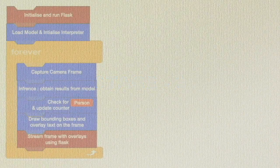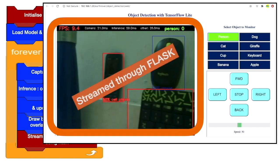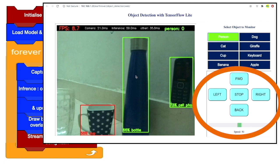In the third stage I created a simple web page that accommodates the output stream generated through Flask. It also has a mechanism for selecting a particular object for monitoring. The motor control section has been reused from original GUI.